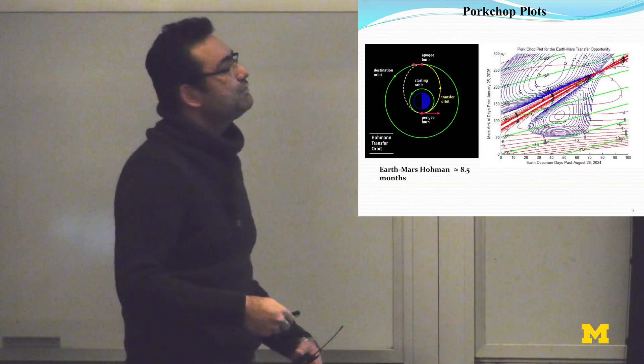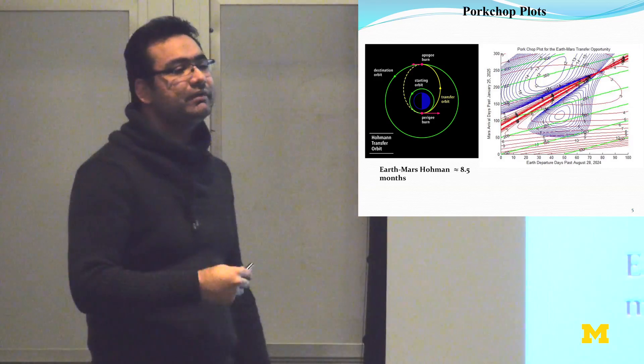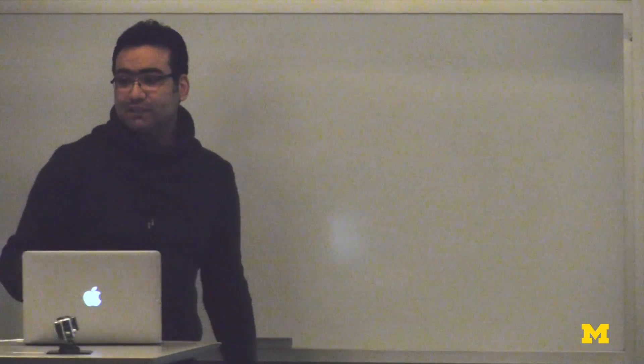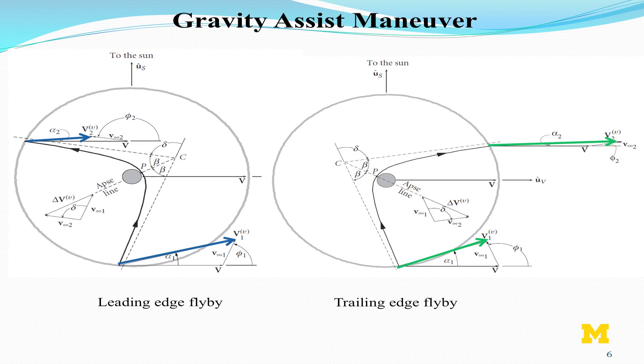They have to look at various pork chop plots for designing most efficient trajectories. This is done for Mars and even other planets. However, this is without using the energy of the planets along the trajectory. In other words, there is a concept that is called gravity assist maneuver.